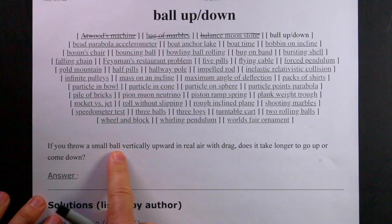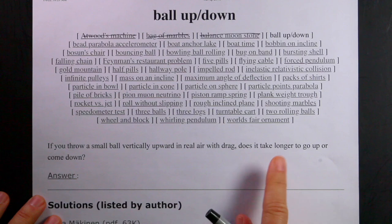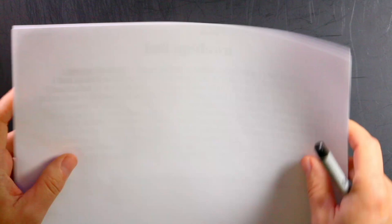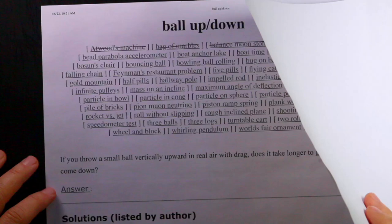The problem: if you throw a small ball vertically upward in real air with drag, does it take longer to go up or to come down? You can get an exact equation of motion for a ball with quadratic air drag as long as it goes straight up and down — but if you throw it at an angle, it gets hard.